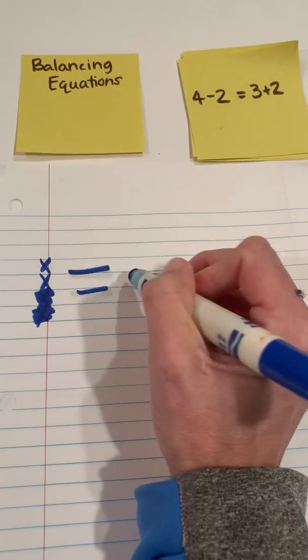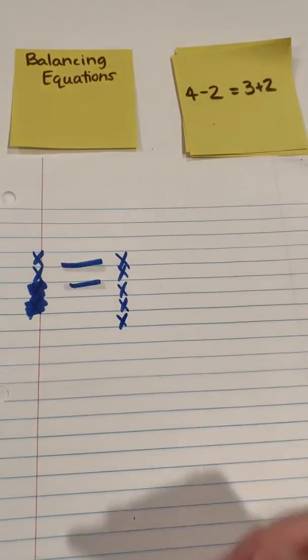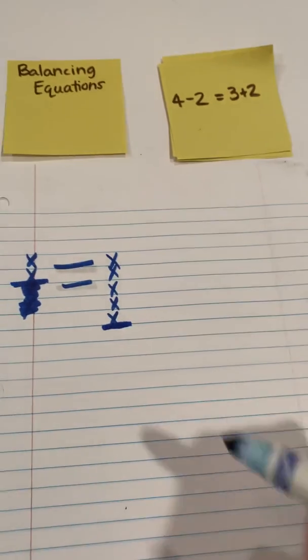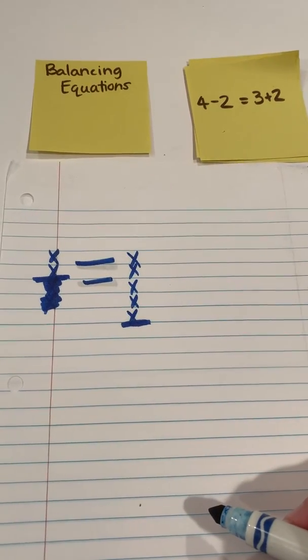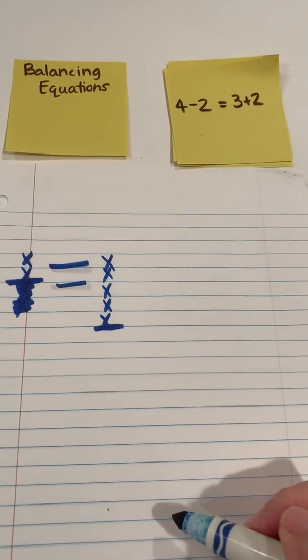There's my 3 plus 2 more. And you can see that is not equal because I'm stopping here and I go here. So that equation of 4 minus 2 is not equal to 3 plus 2.